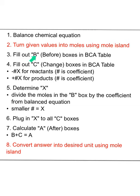Then you'll fill out your before, the B boxes on the BCA table with those mole values, zero for the products, and then your change boxes. Remember it's going to be minus some number times X for the reactants and that number's your coefficient, plus some number times X for the products. Then we figure out what X is. You're going to take the moles in the B box divided by the coefficient for each reactant and the smaller answer becomes our X. Then you'll actually plug in that X, and we can calculate what A is, the after box. Remember B plus C gives us A. Then the last step is whatever the answer is, we have to convert it to whatever the desired unit is for that problem using mole island.